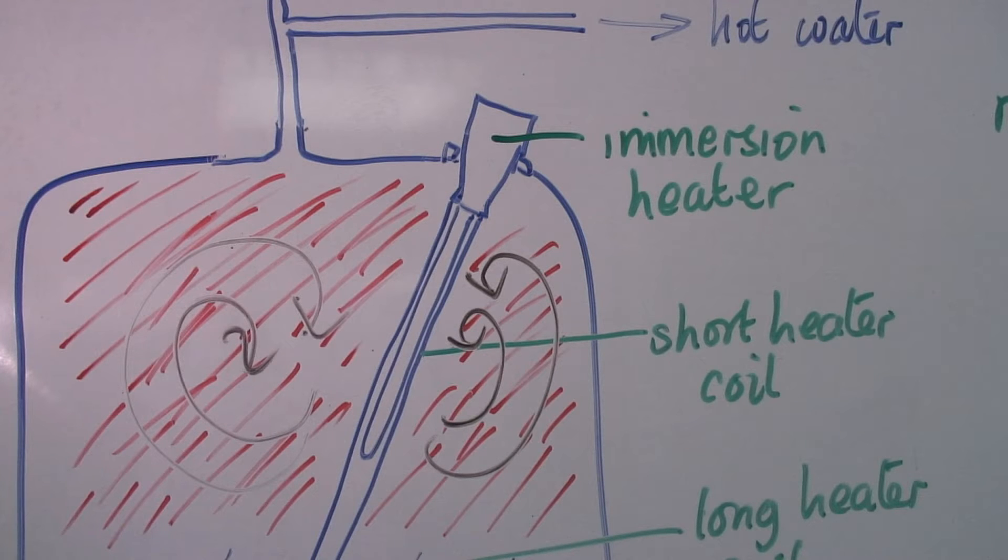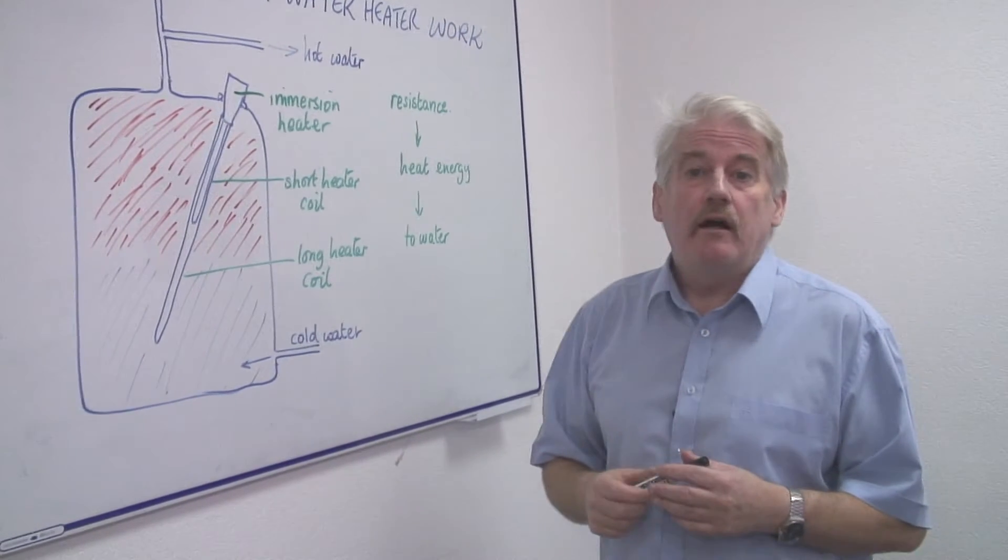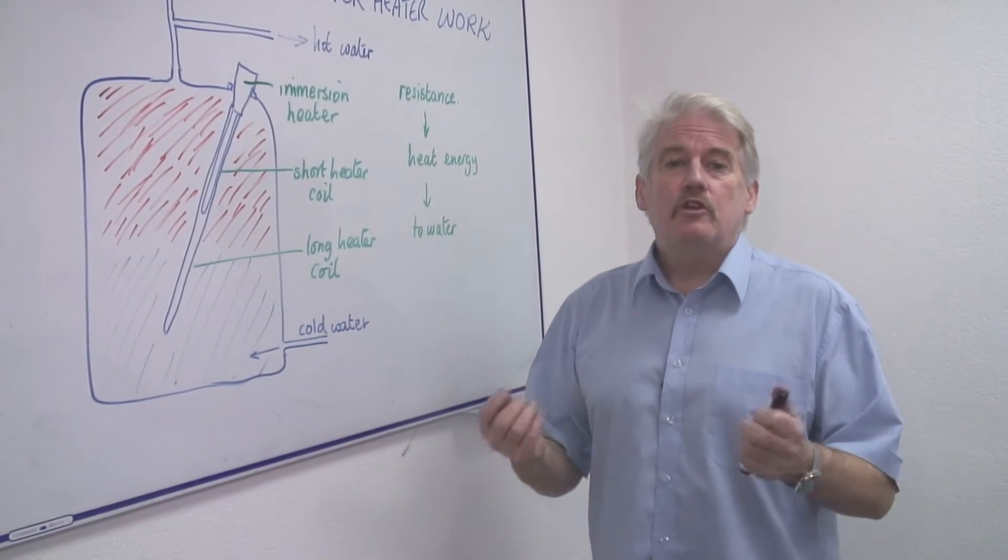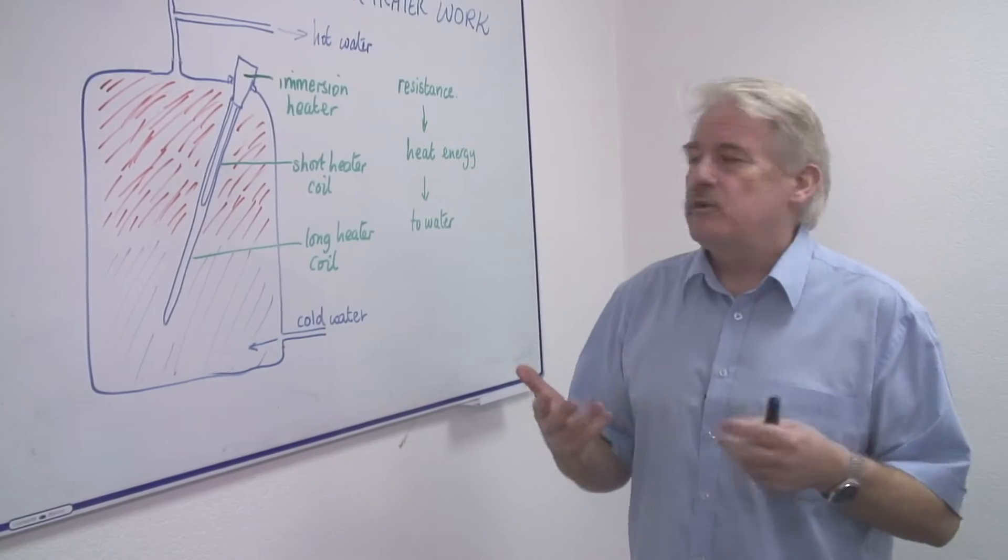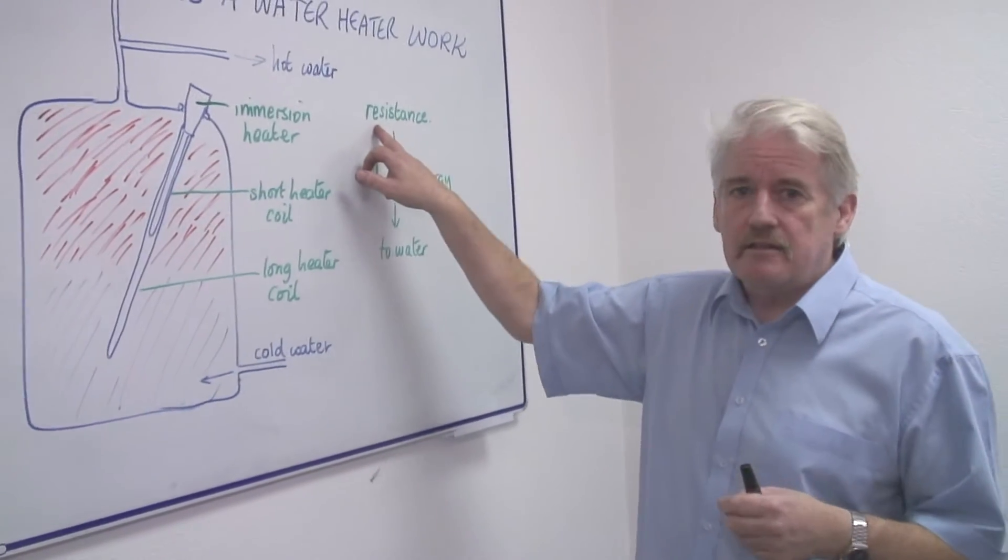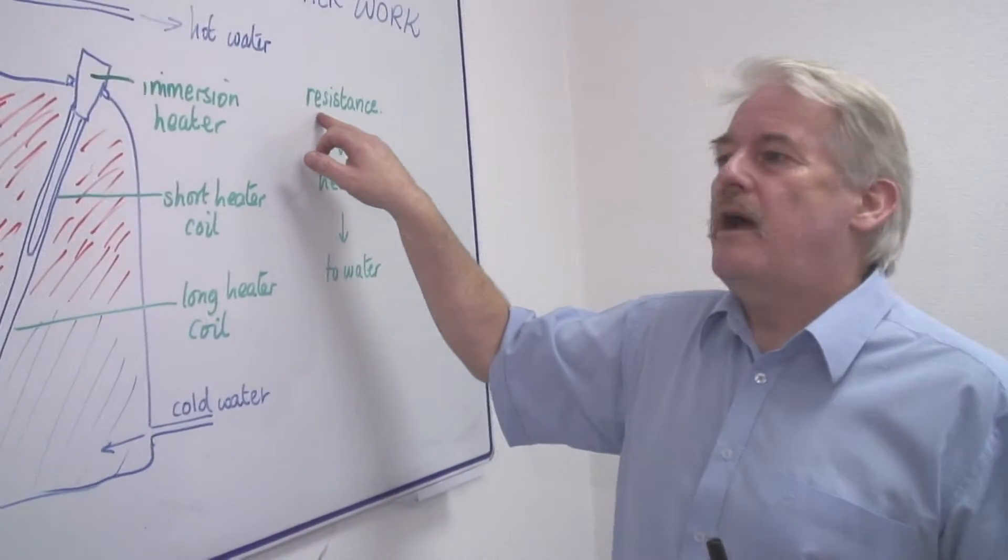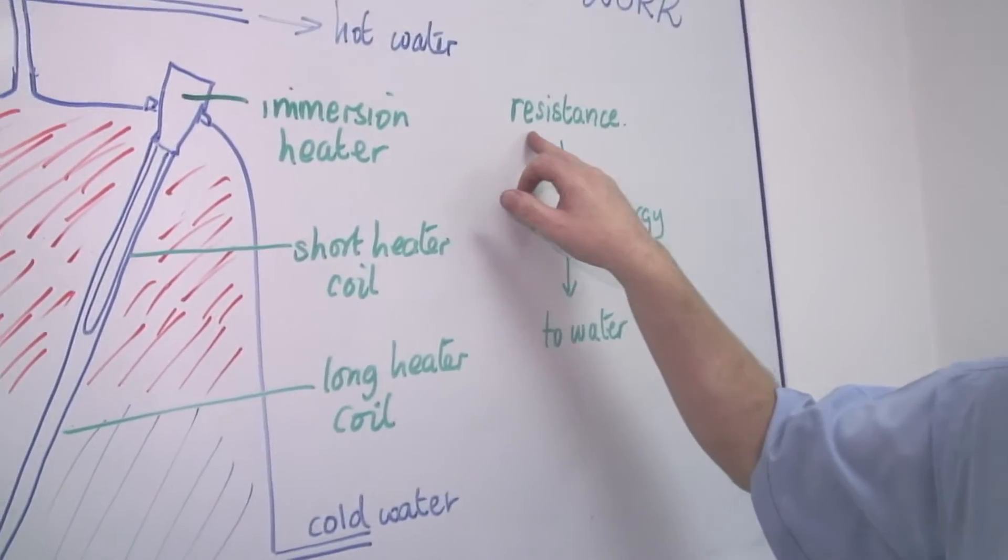Now a water heater basically is a piece of wire and the wire that we use is usually something which has quite a high resistance. When you pass electricity through it, it gets hot.